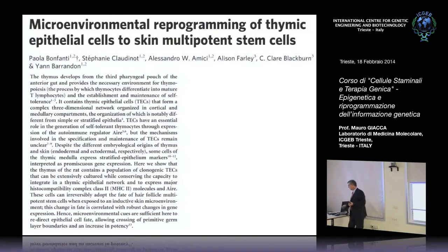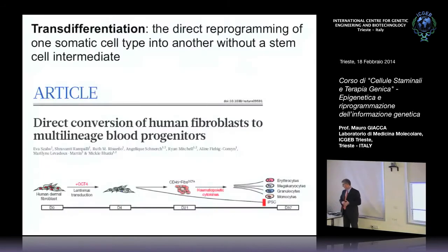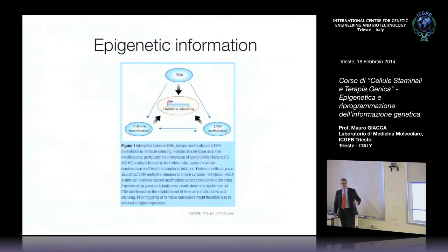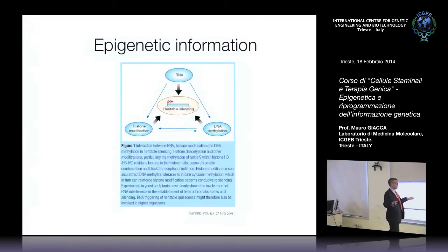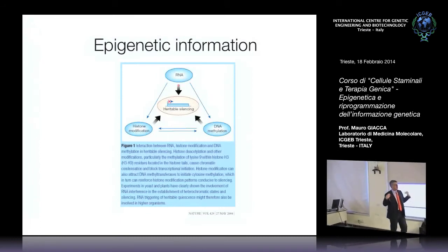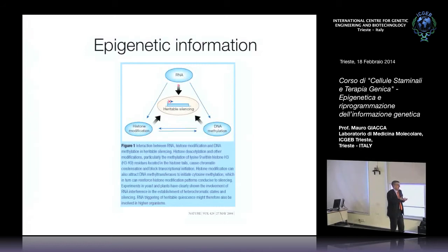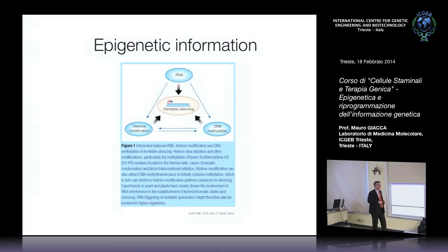Quando parliamo di queste cose non stiamo parlando di cambiare la sequenza del DNA, perché tutte queste cellule hanno esattamente la stessa sequenza del DNA. Tutte le 10^14 cellule del mio organismo hanno esattamente la stessa sequenza del DNA. L'unica eccezione che conosciamo è la ricombinazione dei geni dell'immunoglobulina e del T-cell receptor. Quello che cambia è semplicemente come il DNA viene utilizzato, cioè quali sono i programmi di espressione dei geni.